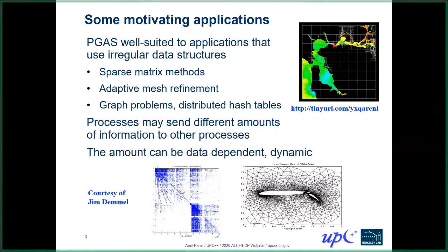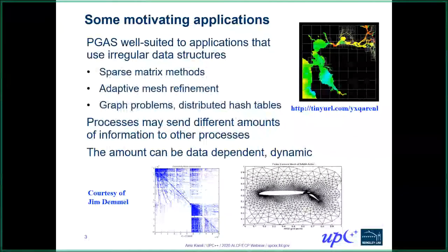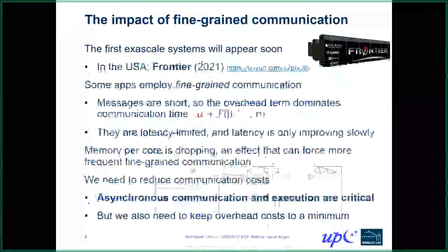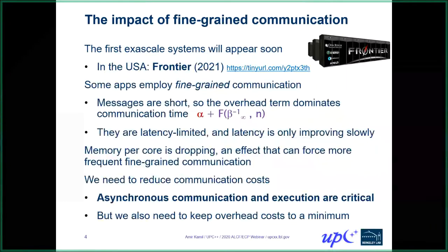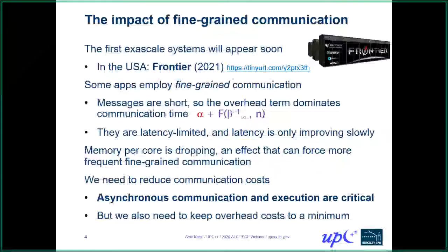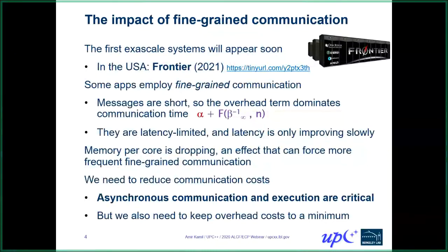This communication amount can be data-dependent and actually dynamic throughout the application. For instance, many AMR applications will end up coarsening or creating finer grids as needed. So we need a programming model that essentially supports these irregular communication patterns. At the same time, we also see system trends that are encouraging fine-grained communication, with exascale systems like Frontier appearing very soon.